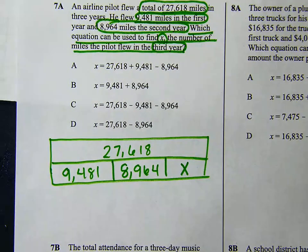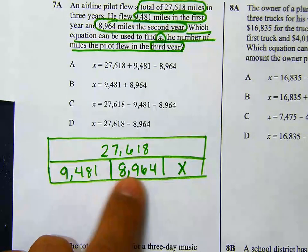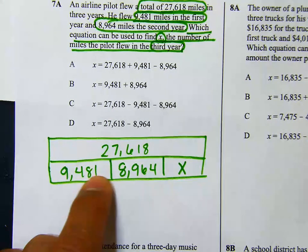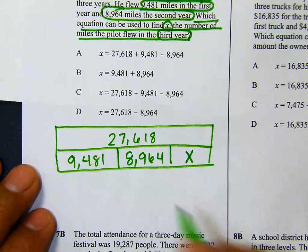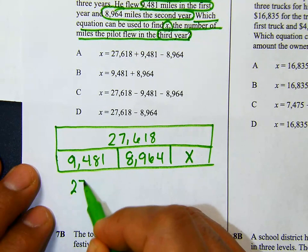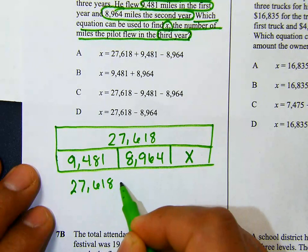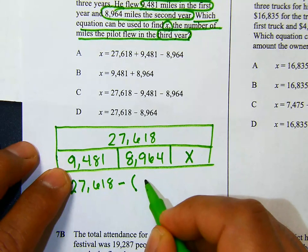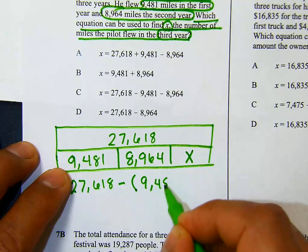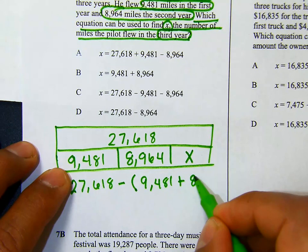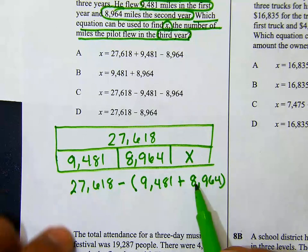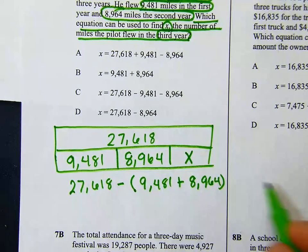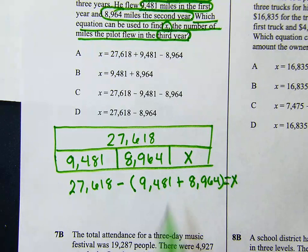Looking at our strip diagram, we can add the first year and the second year together and then subtract from our total. So we could write this equation: 27,618 minus 9,481 and 8,964. We can add those two — whatever the answer is, we subtract from the total — and that's going to equal x, the number of miles he flew in the third year.